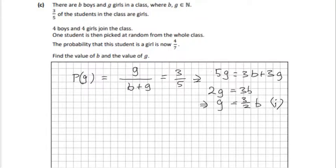Let's put together the second equation. So the probability of the girl in the second instance, when we have the plus four, this one would be G plus four over B plus four plus G plus four, which is B plus G plus eight. That's our new total. And this new value is four over seven.